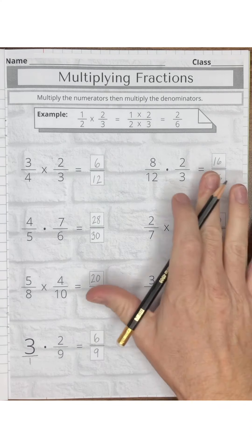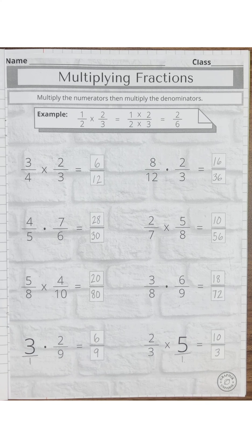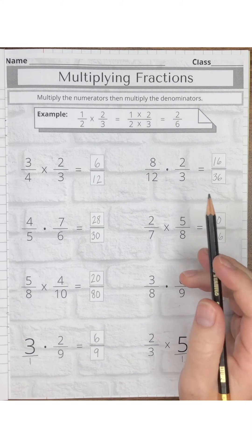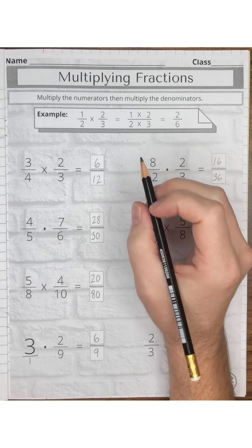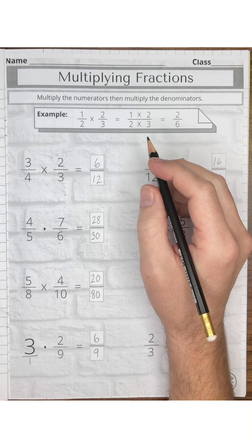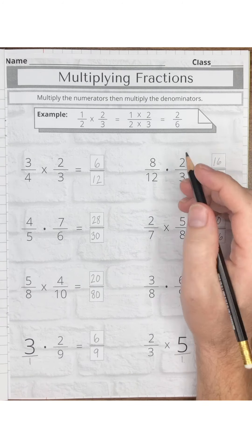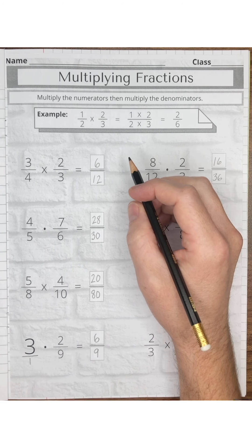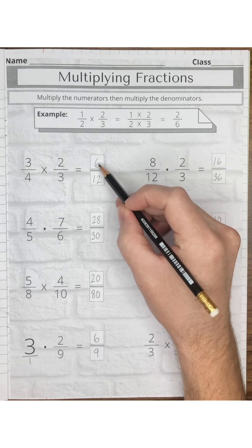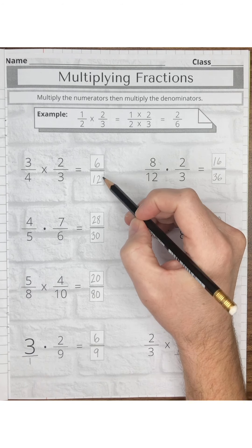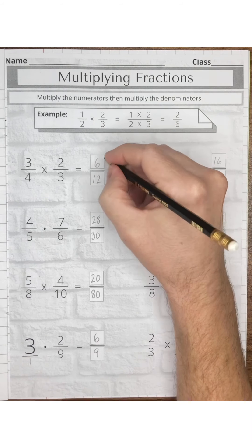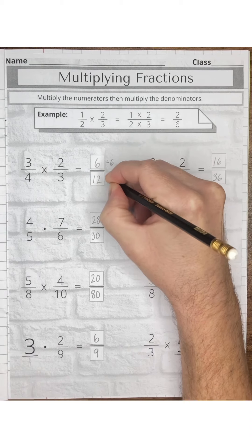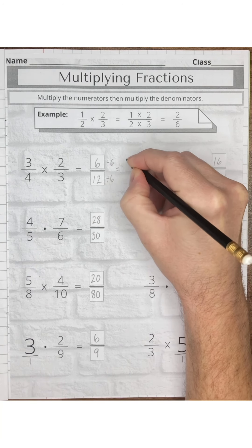Now we have completed all of our problems — let's go back and simplify. When simplifying fractions, we have to find the greatest common factor, or GCF. You can see the simplifying fractions video for more detail. We know that 12 is a multiple of 6, so the greatest common factor is 6. We divide both by 6 and get one-half.